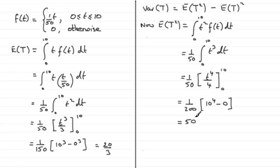So now that we've got our values for E(T) and E(T²), we can work out the variance, the variance of the random variable T. It's going to be then E(T²), which is 50, minus 20 over 3, all squared.